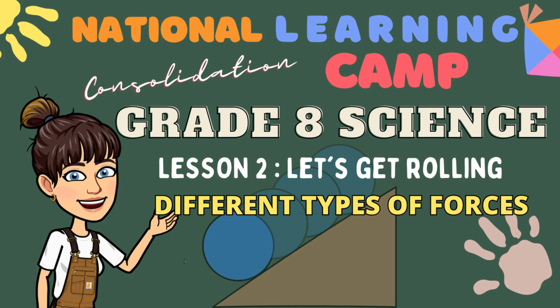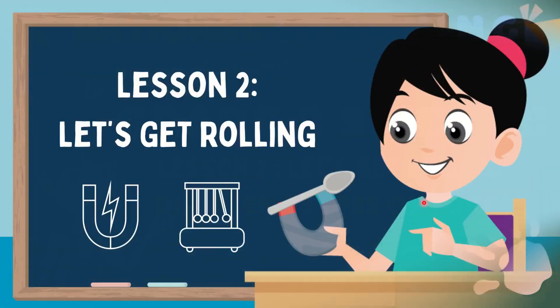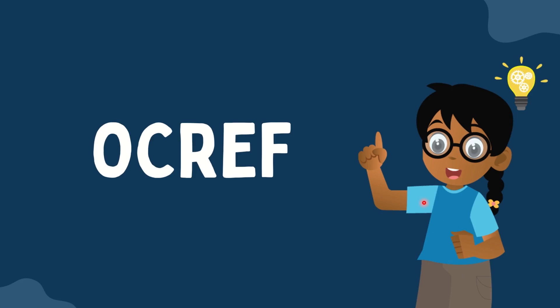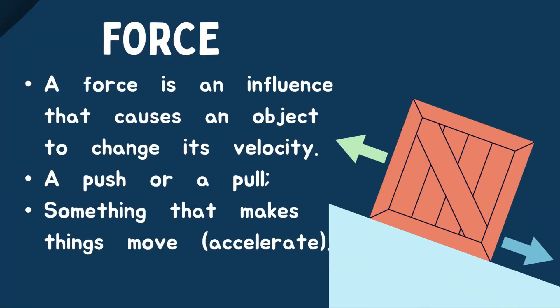Let's fill our minds with another science concept. For our short review, let us have jumbled letters. All you have to do is arrange the following letters and form a new word. Let's start! For our first word — this is force. When we say force, it is an influence that causes an object to change its velocity. It is a push or a pull, or something that makes things move.